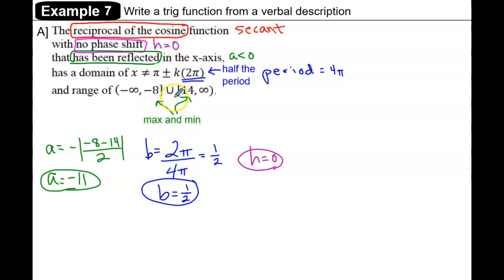We average the relative extrema to find k. So k = (-8 + 14)/2 = 6/2 = 3.